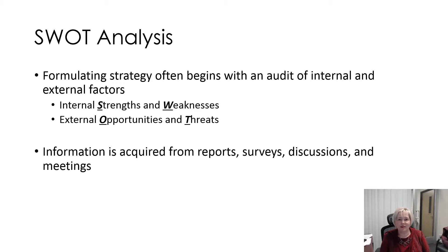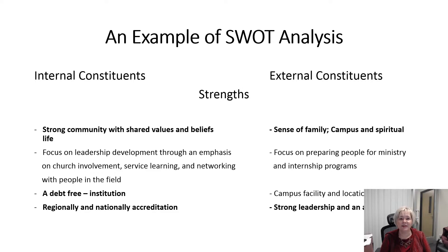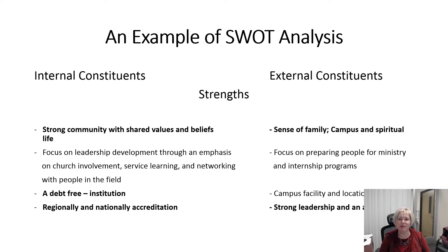About every five years, an organization gets together and they begin to facilitate and prepare a SWOT analysis for the various constituency groups. We're going to look at the strengths first, and I want you to concentrate primarily on the bullets that are bold. We're going to start by looking at the bullets on the left-hand side, which is the internal constituencies — those involved directly with Life Pacific College: leadership, faculty, staff, and students. The external constituents on the right side are those highly invested in Life Pacific College, such as community leaders and individuals from the Foursquare denomination.